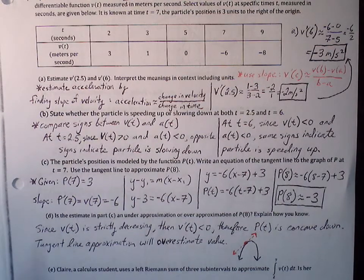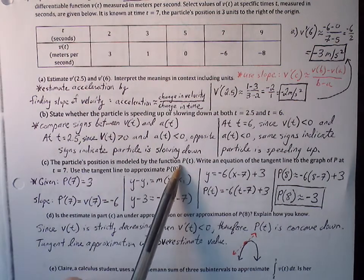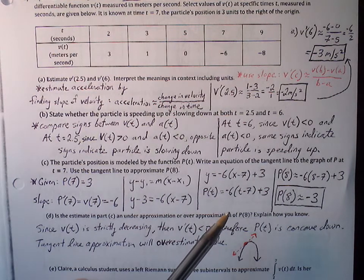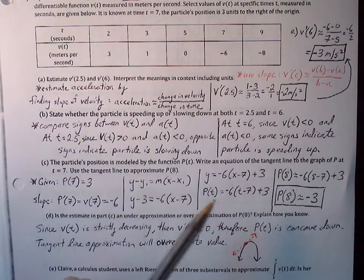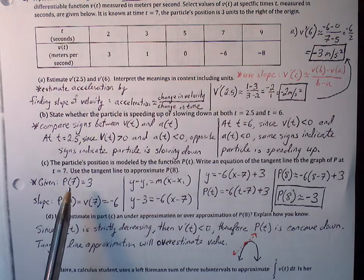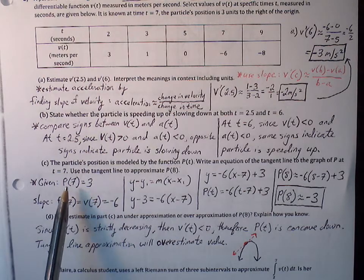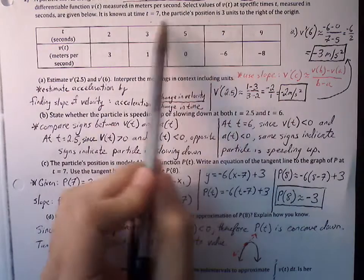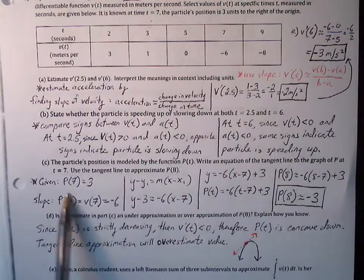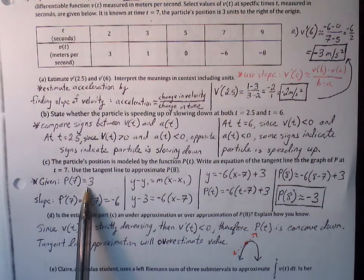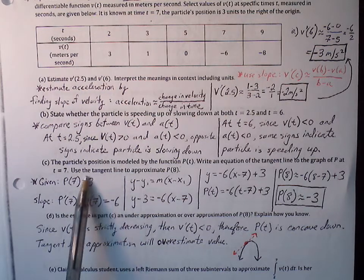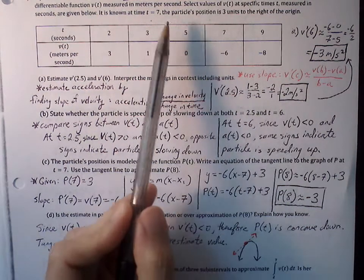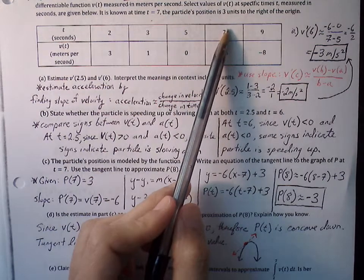Part C: the particle's position is modeled by the function p of t. Write an equation of the tangent line to the graph of p at t equals 7, then use the tangent line to approximate p of 8. First, the position at t equals 7 is 3, so our ordered pair is p of 7 equals 3. To write the tangent line, we also need the slope, which is p prime — the velocity of the particle at t equals 7.